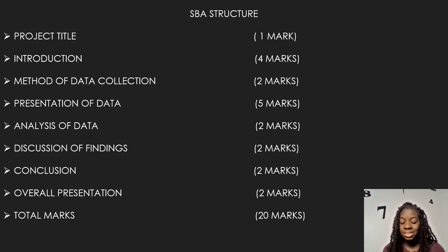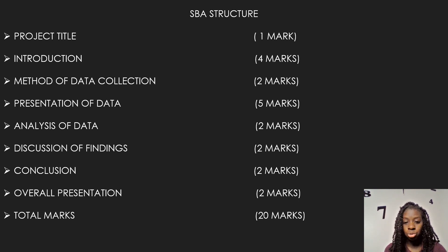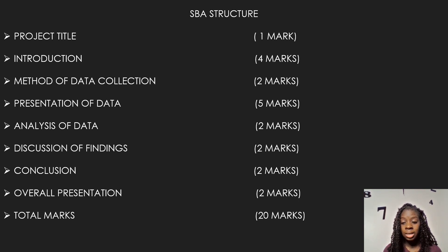The structure of Paper 3, which is the School-Based Assessment, includes: the project title worth one mark, the introduction worth four marks including the table of contents, the method of data collection worth two marks, presentation of data five marks, analysis of data two marks, discussion of findings two marks, conclusion two marks, and overall presentation two marks. The total marks you can attain is 20 out of 20.